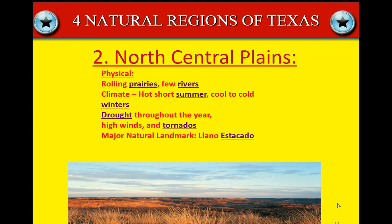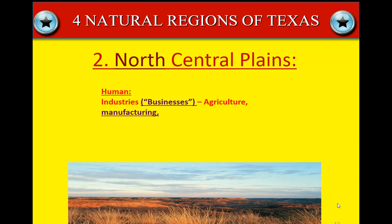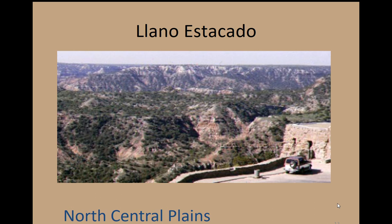A major natural landmark is the Llano Estacado. For human characteristics, the businesses of the north central plains are agriculture and manufacturing. There's also a lot of military defense contractors around Fort Worth and Dallas. Aviation and airlines are big too — DFW airport, and Southwest Airlines is based out of Dallas, Texas. And here's a picture of the Llano Estacado — it's beautiful down there if you've ever been to see it.